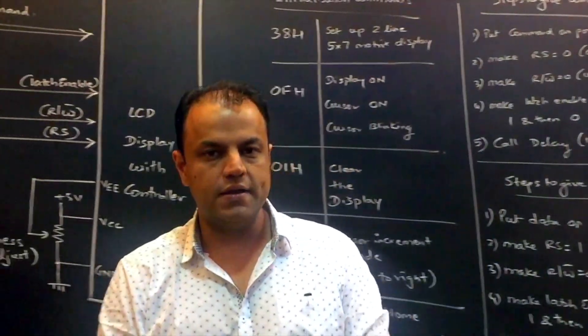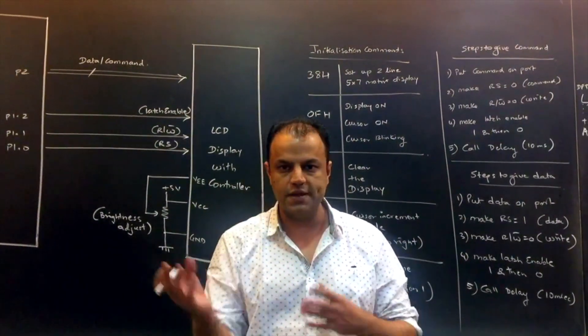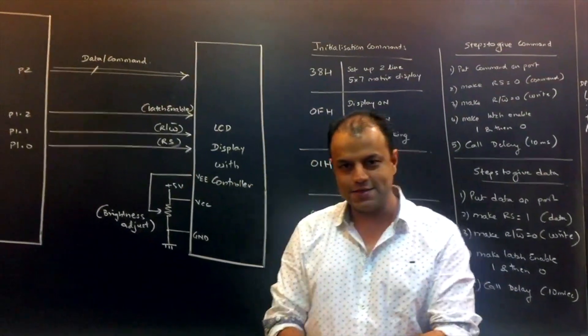So suppose you want to display a message called Hello World as an example. You make a lookup table containing ASCII codes of all these alphabets. Please remember to include the space also. Space also has an ASCII code. So you create a lookup table. One by one we take values from the lookup table, go on sending it to the display.